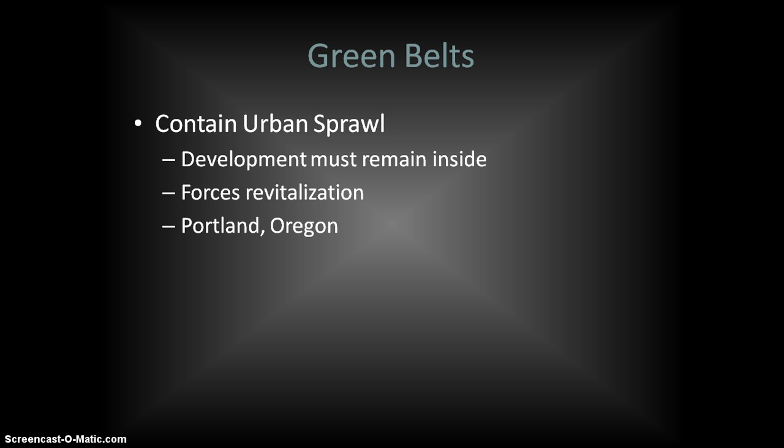The idea of the greenbelt or urban growth boundary is to try and contain urban sprawl. In the area directly under the control of the central city, instead of allowing for less dense development surrounding the city — very characteristic of places with lots of sprawl like Atlanta or Los Angeles — you create this greenbelt which basically says that any new development zoned for interaction with the urban center, whether commercial, residential, or industrial, must take place inside the greenbelt.